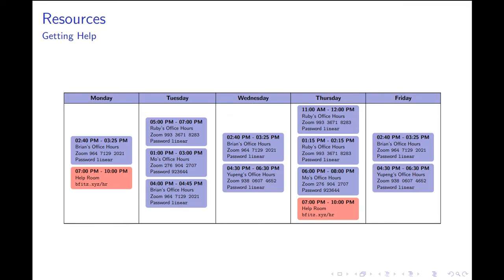There are lots of opportunities to get help in this course. First, office hours: myself and the TAs will be running office hours over Zoom for the first two weeks, then a mix of Zoom and in-person. I have office hours between our two lectures from 2:40 to 3:25 on Monday, Wednesday, and Friday, and also over Zoom on Tuesdays from 4:00 to 4:45. Each of the TAs has four office hours scheduled — that's 12 additional hours in total. Every single day of the week, at least one of us will have office hours.